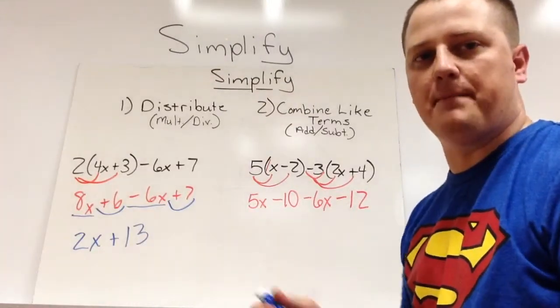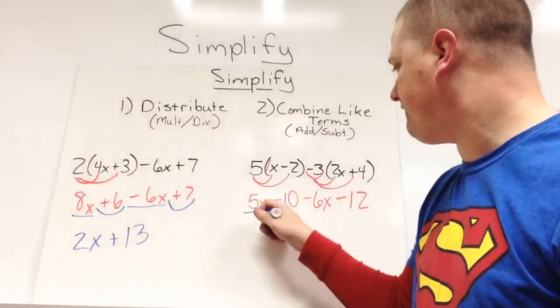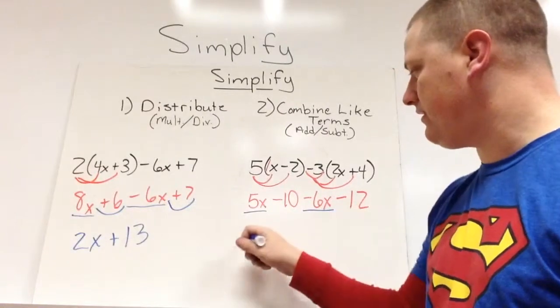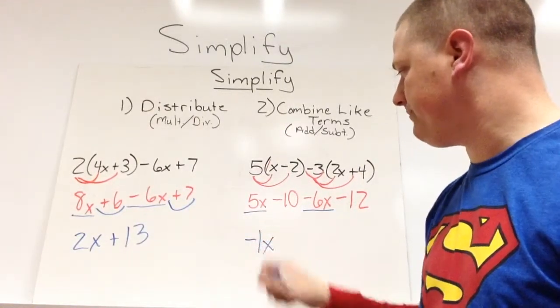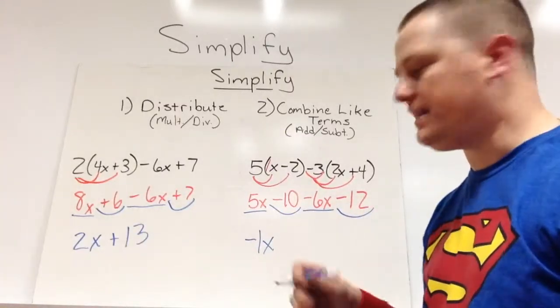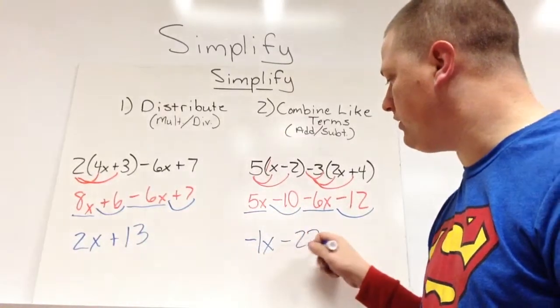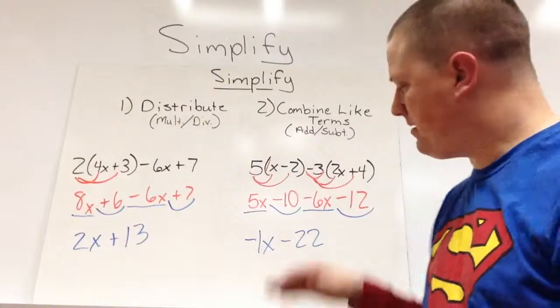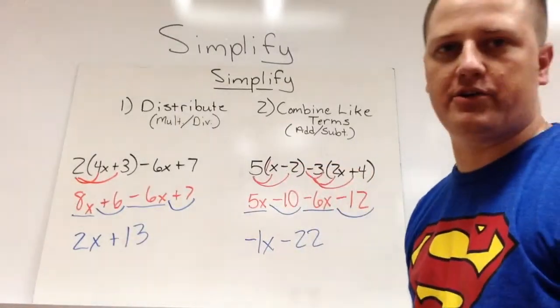And now we go back to our combining like terms. 5x negative 6x, make negative 1x. Negative 10, negative 12, make negative 22. And again, much simpler than the original problem.